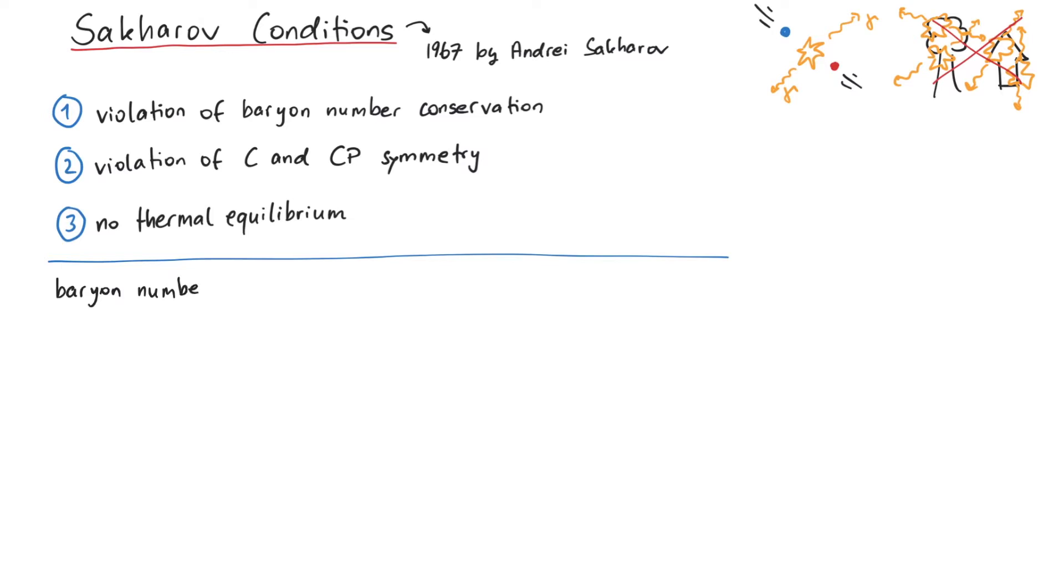First, violation of baryon number conservation. This is an obvious condition, because if an interaction respects baryon number conservation, we would never get more baryons than antibaryons after the interaction as compared to before.